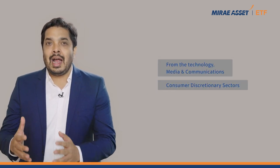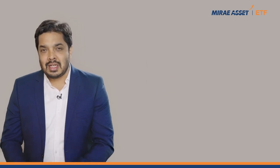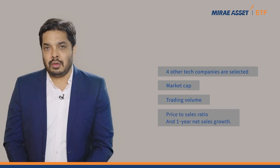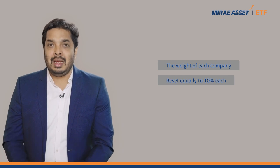Now coming to the product construct, the aim of the index and hence the ETF is to track the performance of 10 highly traded growth stocks of technology and tech-enabled companies from the technology, media and communications, and consumer discretionary sectors. As the name suggests, along with Facebook, Apple, Amazon, Netflix and Google — which are collectively known as FANG — four other tech companies are selected based on a combination of market cap, trading volume, price-to-sales ratio, and one-year net sales growth. The weight of each company in the portfolio is reset to 10% each on a quarterly basis, along with stock changes if any.